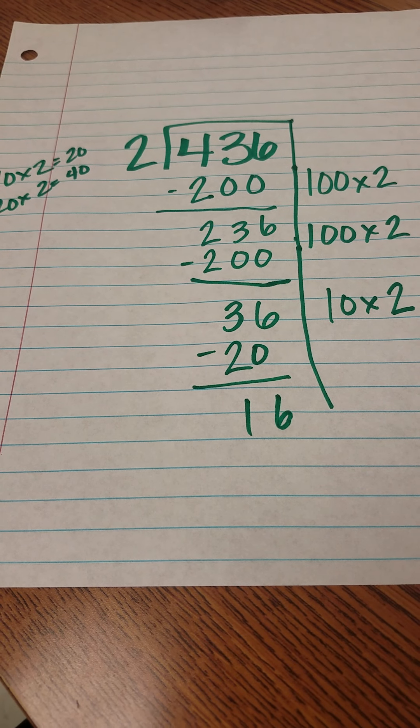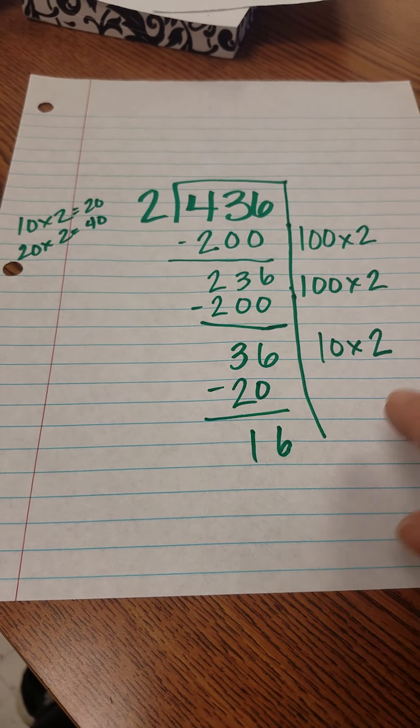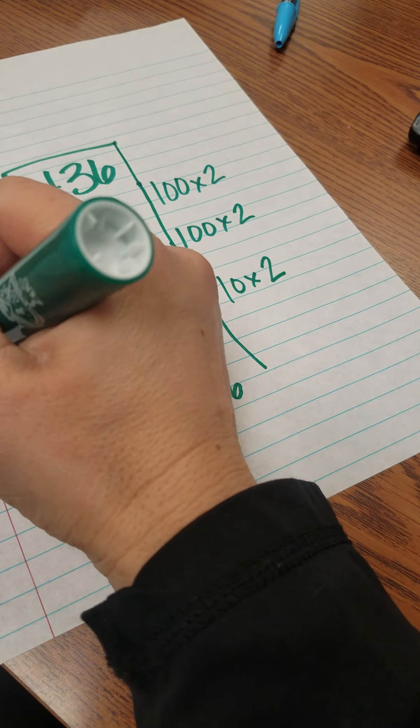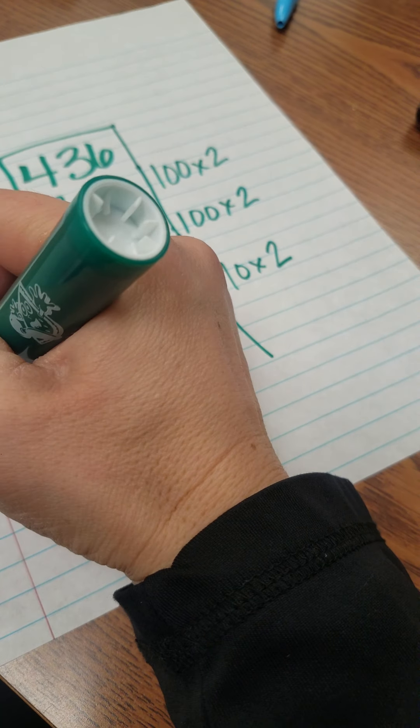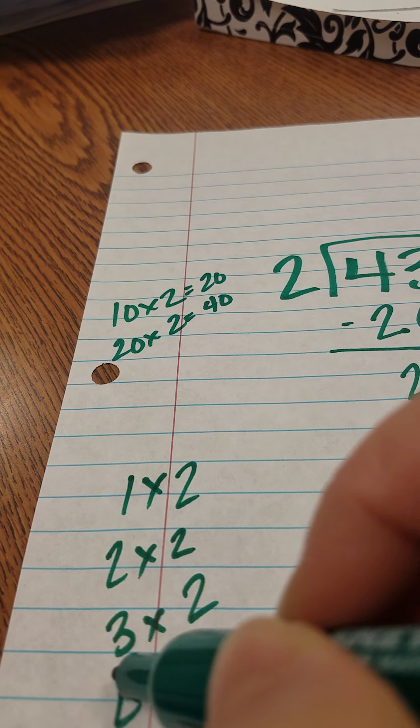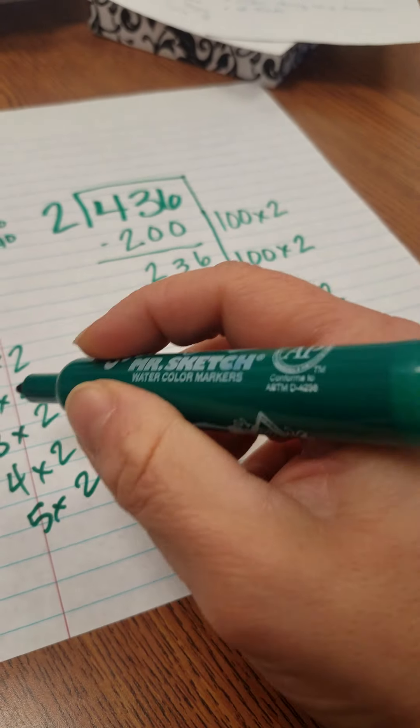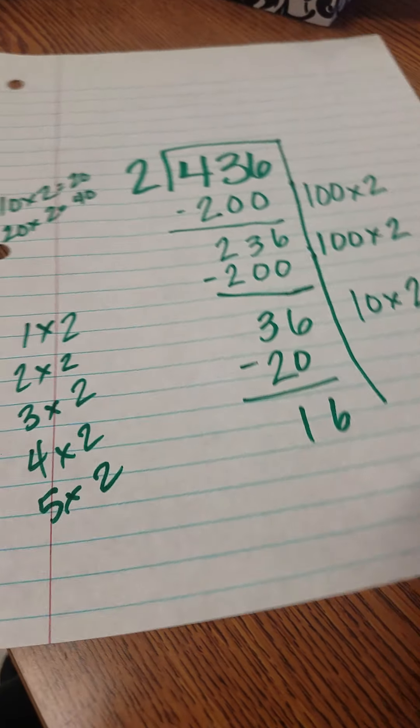The multiples of 2 are the ones that you would multiply by, so it would be like 1 times 2, 2 times 2, I'm writing these down here, 3 times 2, 4 times 2, 5 times 2, you just keep going until you get to 16.